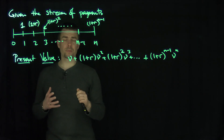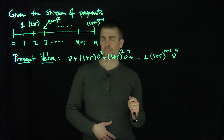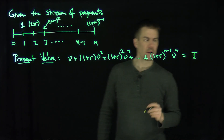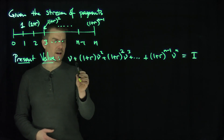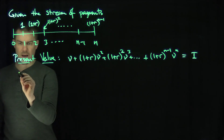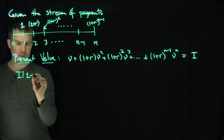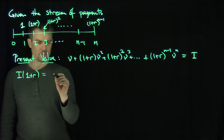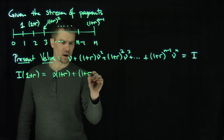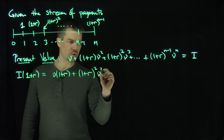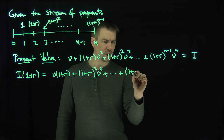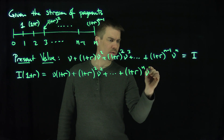Now this would be an ordinary geometric progression — I'm just missing an extra factor of (1+r). So I'm going to call this expression I, and I'm going to multiply the whole expression by (1+r) in order to bump all the factors of (1+r) up. So I times (1+r) is going to be ν(1+r) plus (1+r)² ν squared, plus all the way down to (1+r) to the n times ν to the n.